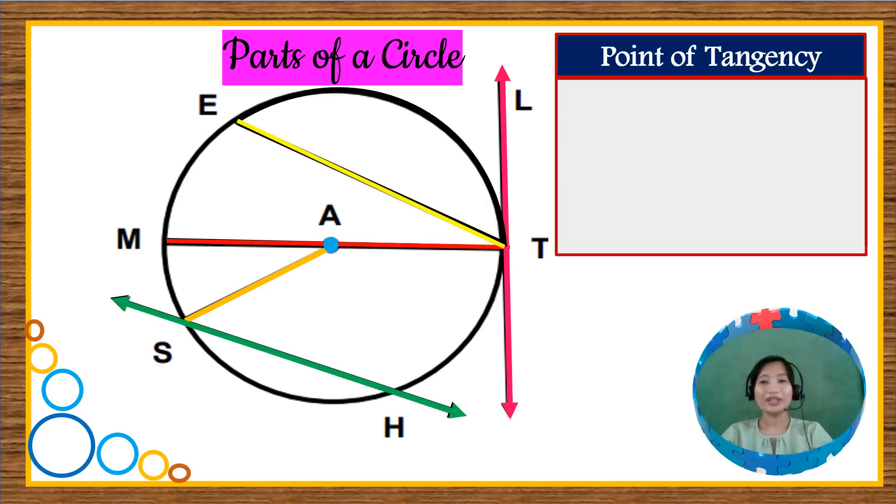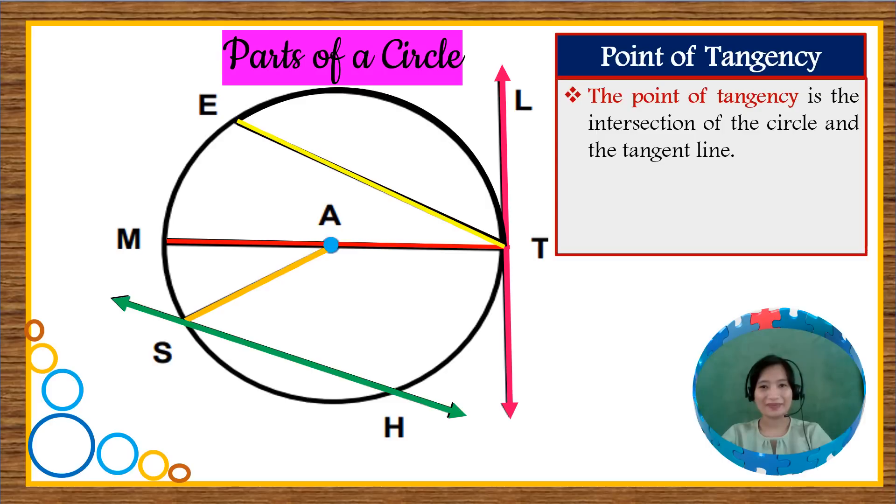The intersection between the circle and the tangent line is called the point of tangency. In our diagram, the point of tangency of circle A and line LT is point T. So it is here, point T.